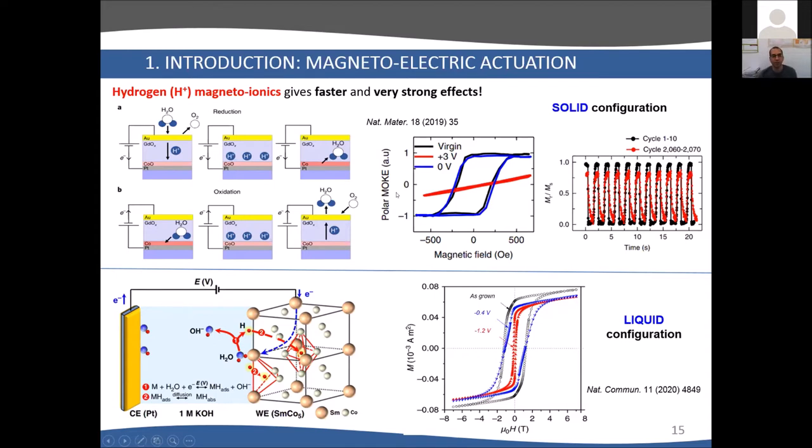Another work, this was in solid electrolyte with humidity. Another work published this year by Robert Krug's group immersed samarium cobalt in an aqueous electrolyte. The hydrogen goes to the grain boundaries of samarium cobalt and allows huge tailoring of the coercivity by more than one tesla, as you can see. The as-grown is the black curve. When you apply minus 1.2 volts, you reduce the coercivity a lot, then you can recover almost completely by applying minus 0.4 volts.